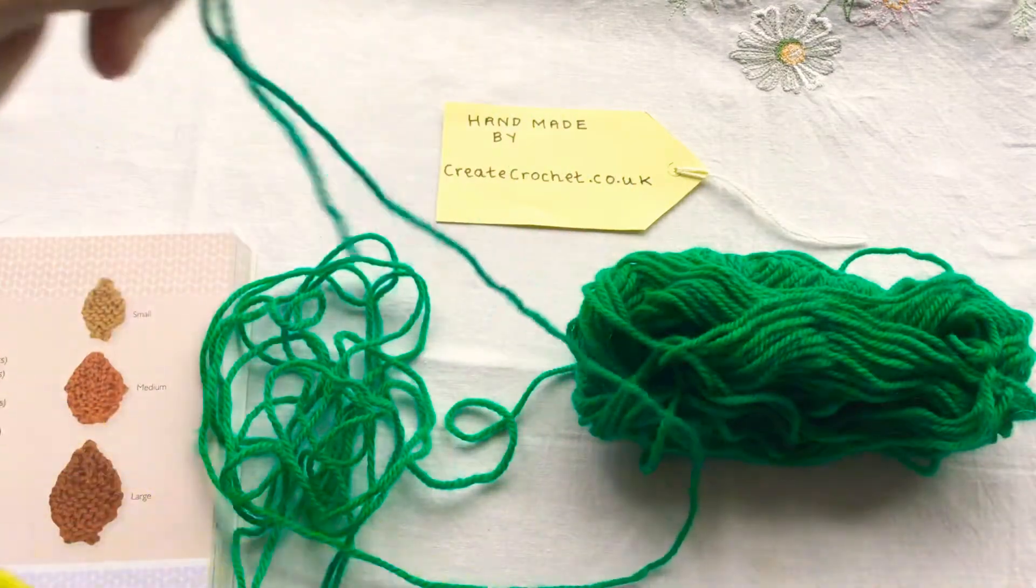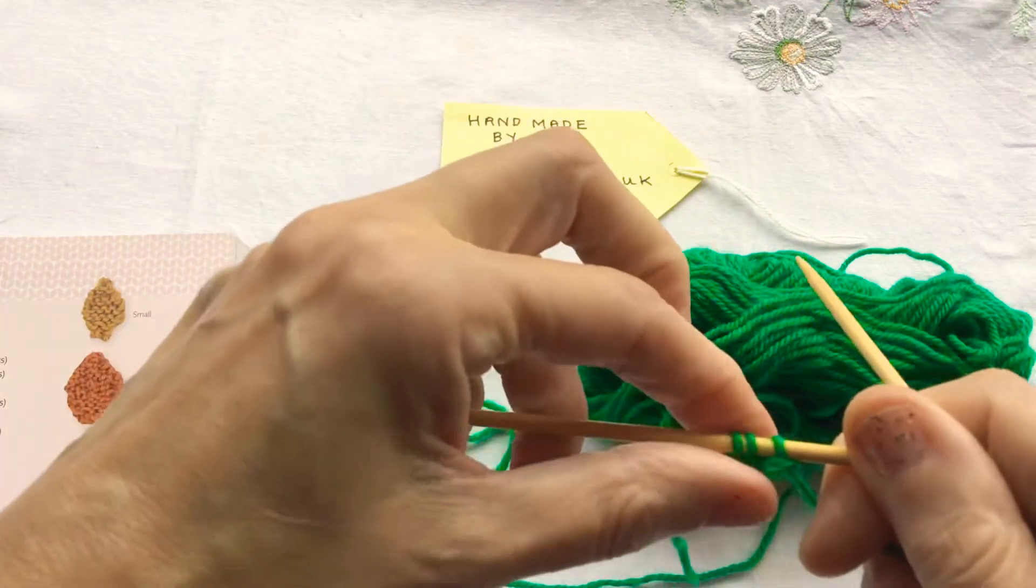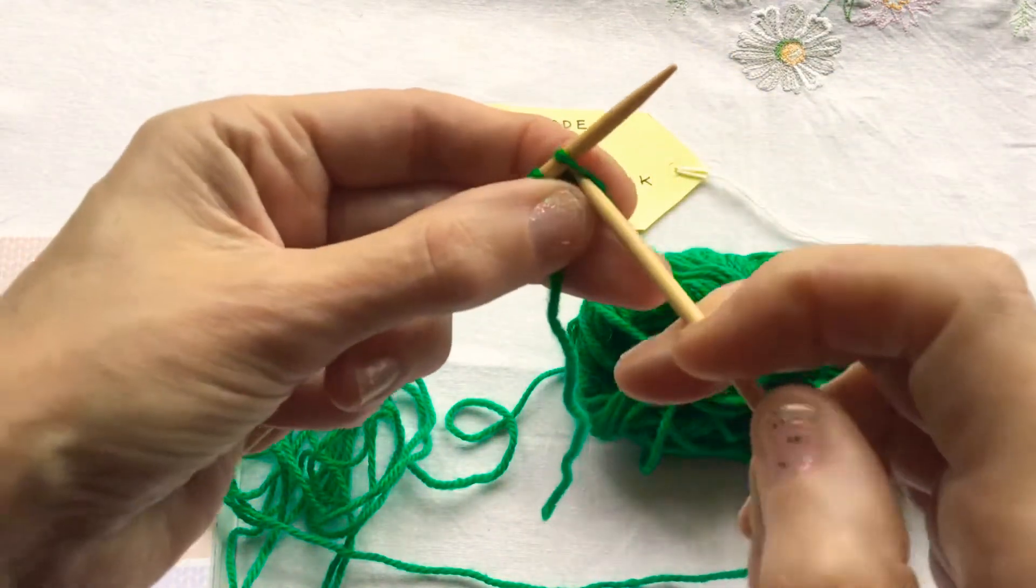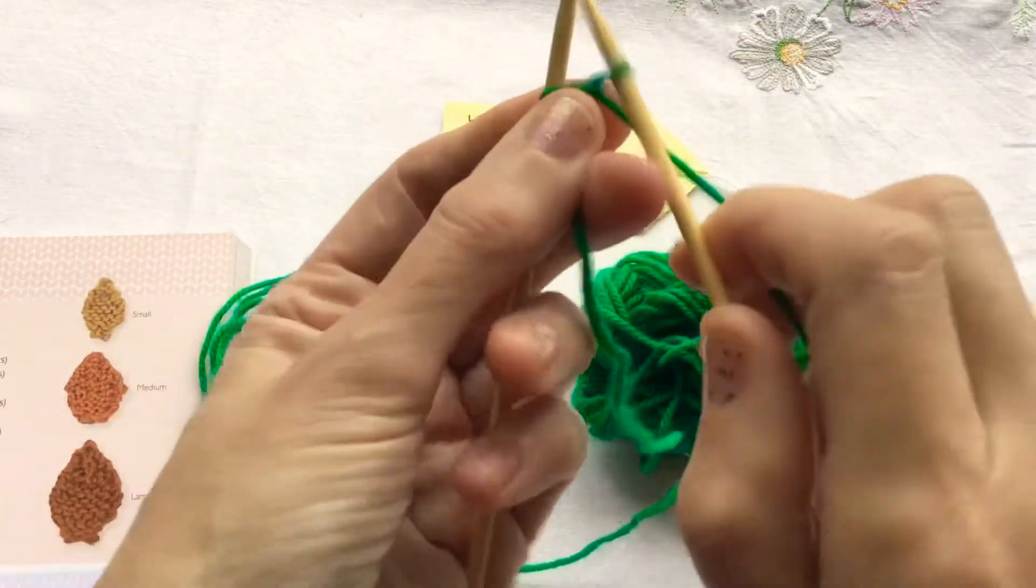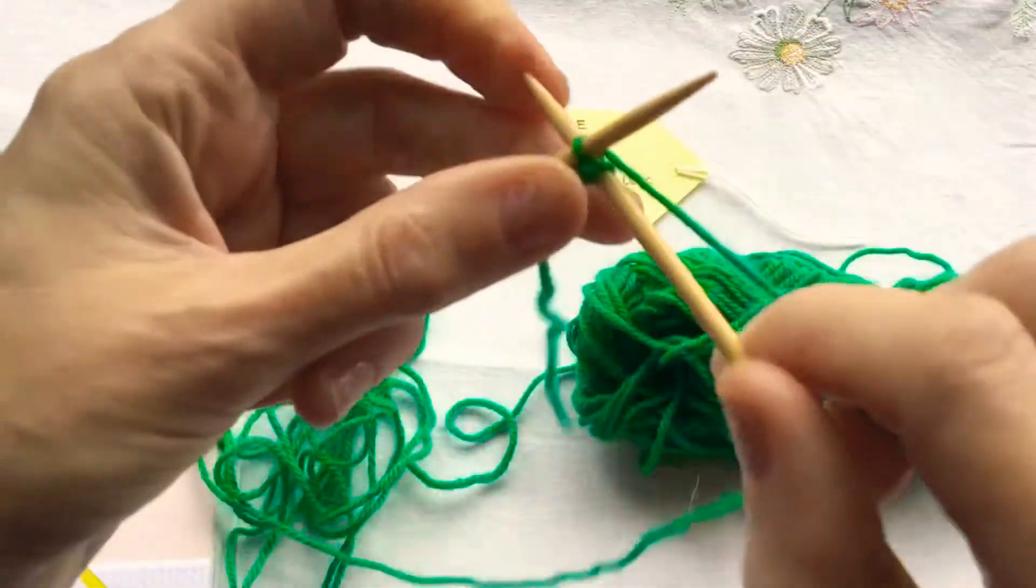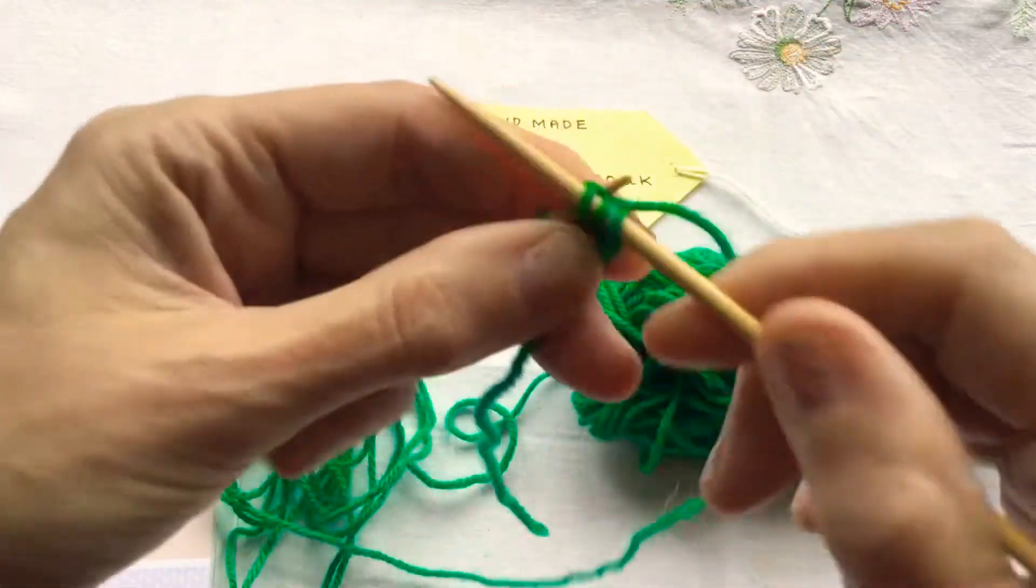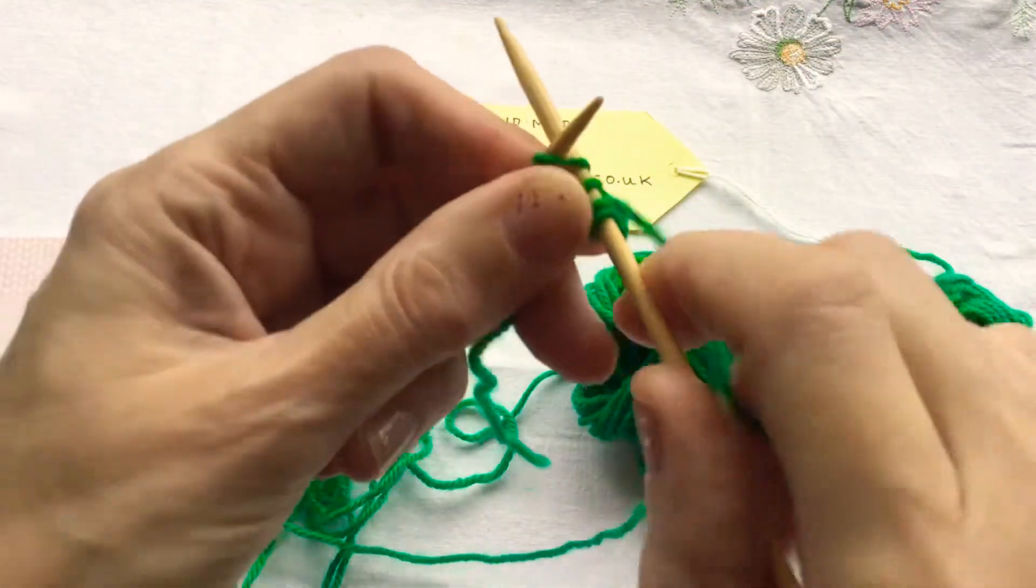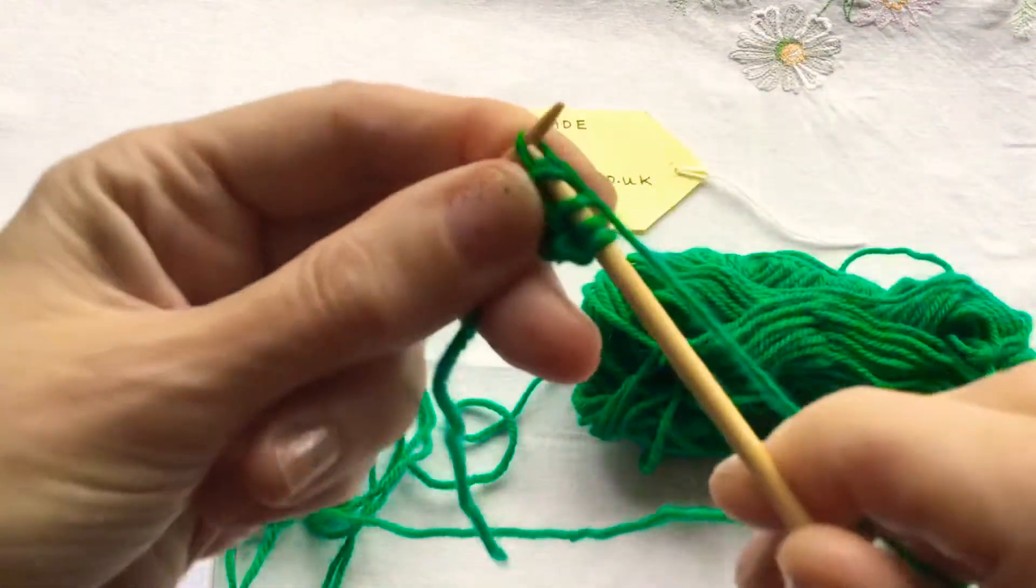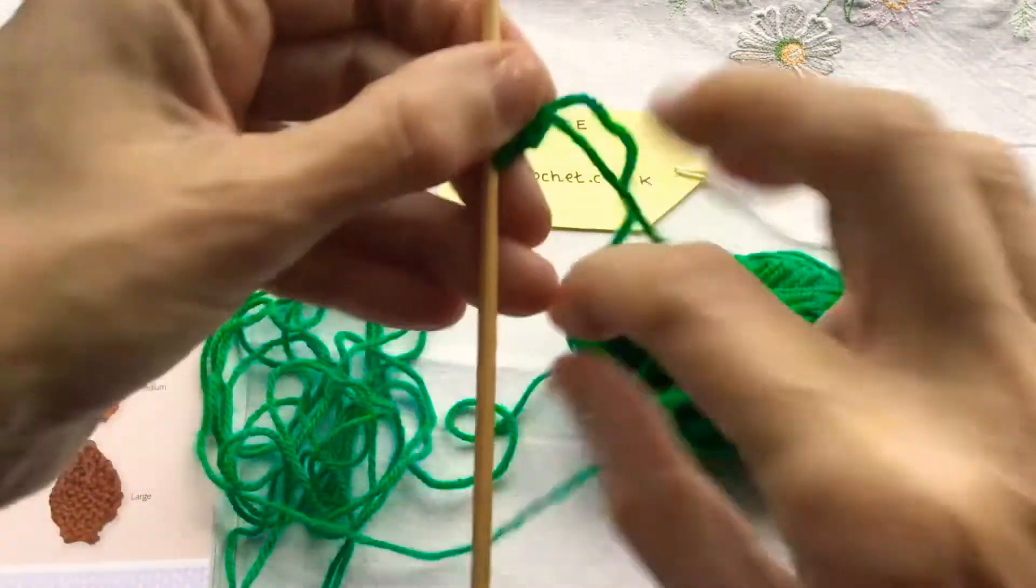Turn. The third row is worked as knit into the front and back of the first stitch, knit one, and then knit into the front and back of the last stitch. So now we have 5 stitches. Then turn.